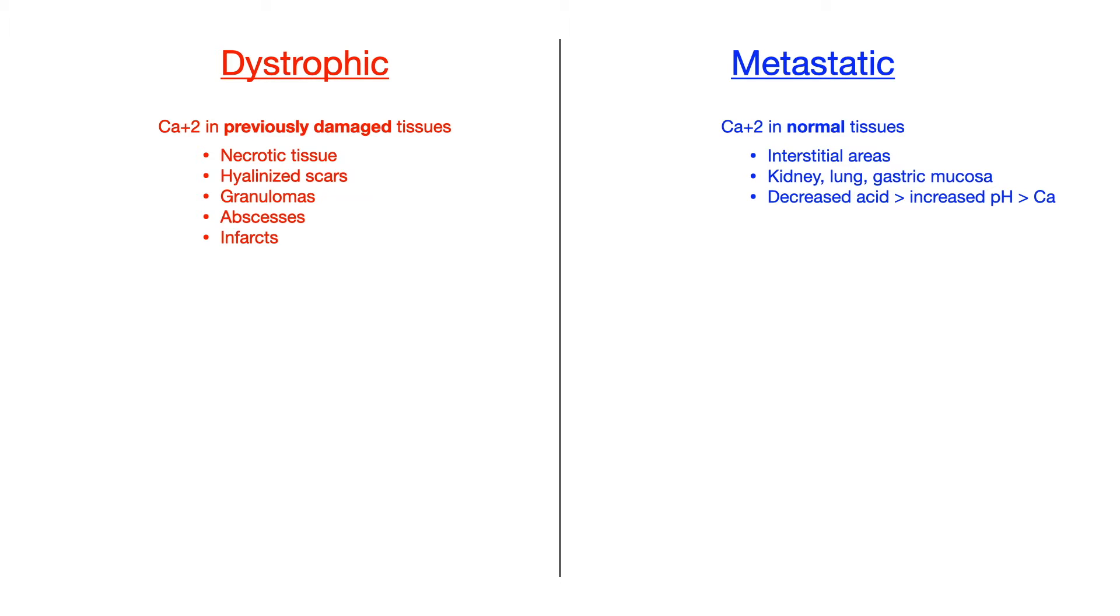In dystrophic calcification, you're going to see that calcium being deposited in necrotic tissue, hyalinized scars, granulomas, abscesses, infarcts, that kind of thing. Again, the tissue has to have been previously damaged before the onset of the calcification.